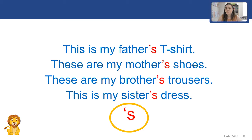It is mother. Who is the owner of the trousers? It is my brother. Who is the owner of the dress? It is my sister. Now, pay attention that all of these owners have ending S at the end of the word. But it's not just the letter S — what else can you see here? Of course, it's an apostrophe.